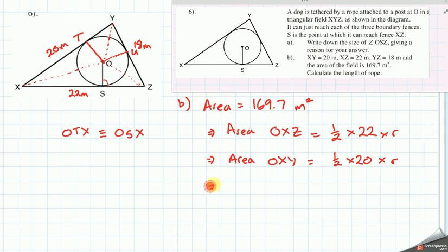Don't want to lose too much of this. So, the area for the third side, O, Y, Z, is one-half of 18, times R. And the sum of all of these is the area of the big triangle.